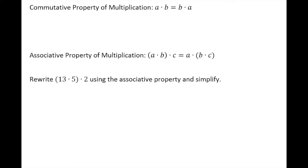In section 1.3 we studied the commutative property of addition and the associative property of addition. Now it turns out that both of those properties also hold for multiplication. So remember, the commutative property says that in the instance of multiplication, it doesn't matter what order I multiply in.